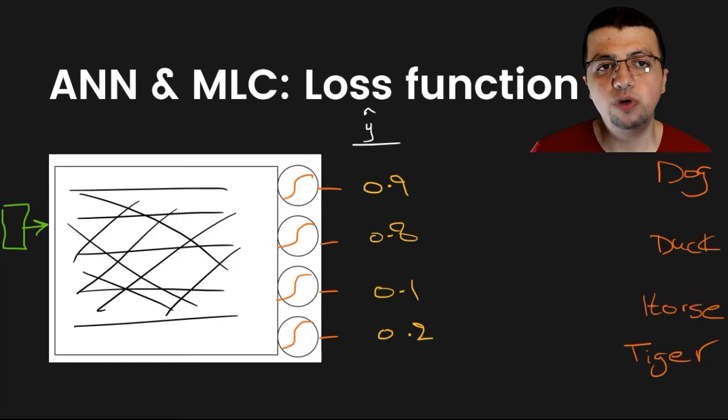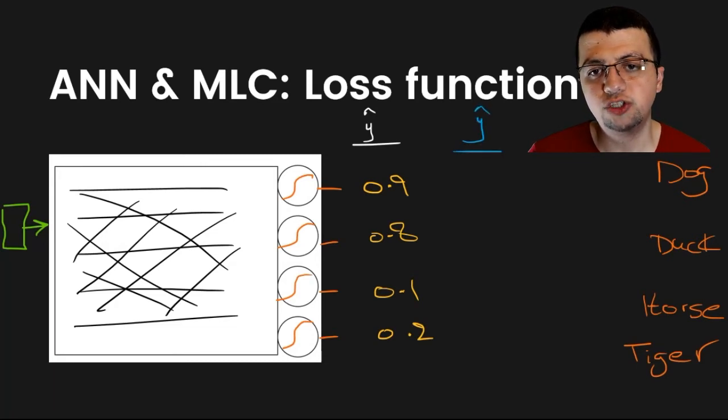And we also talked about the ground truth vector. In this case, your ground truth vector is, let's just say 1, 1, 0, 0.